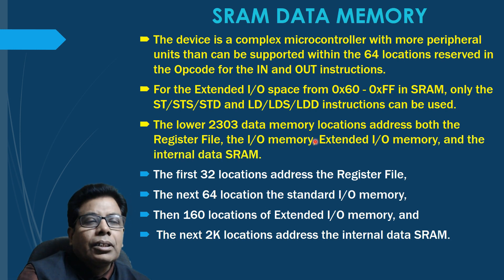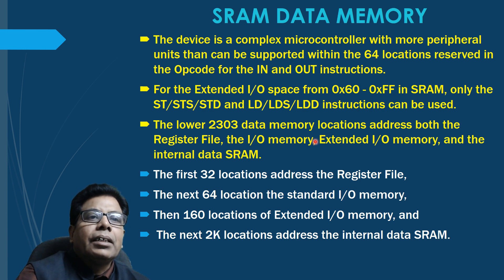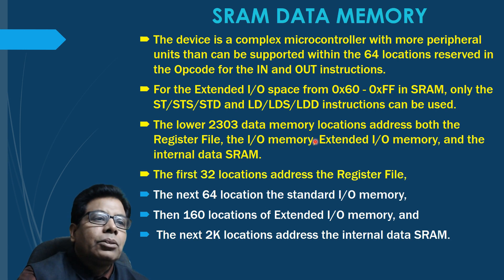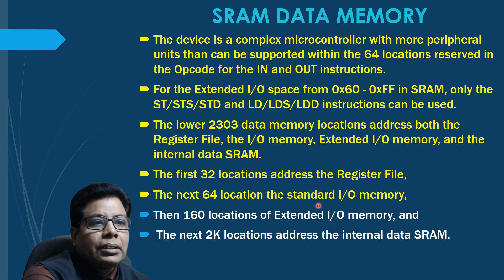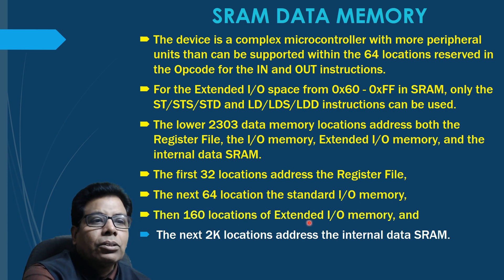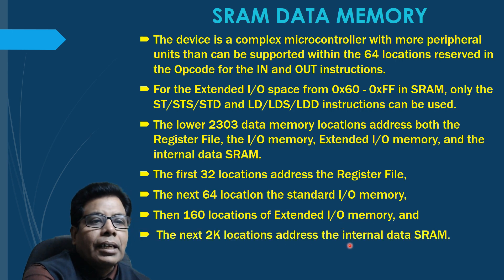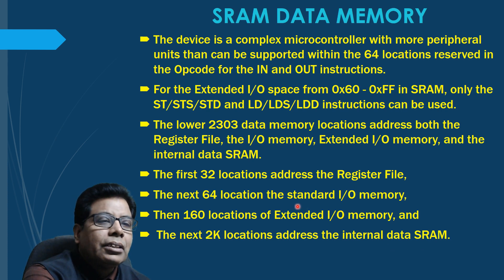The lower 2303 data memory locations address the register file, I/O memory, extended I/O memory, and the internal data SRAM. The first 32 locations address the register file, then the next 64 locations address the standard I/O memory, followed by 160 locations of extended I/O memory, and the next 2K locations address the internal data SRAM.